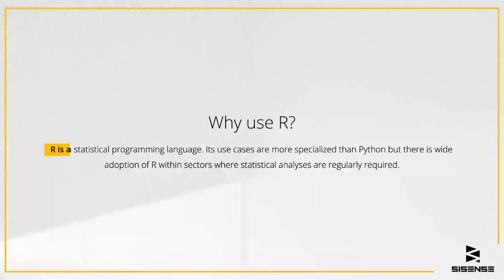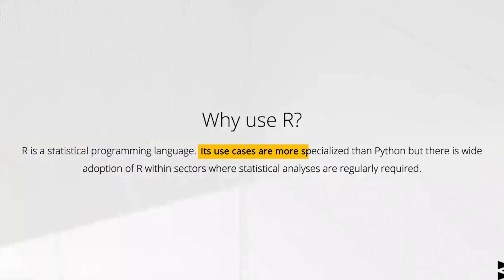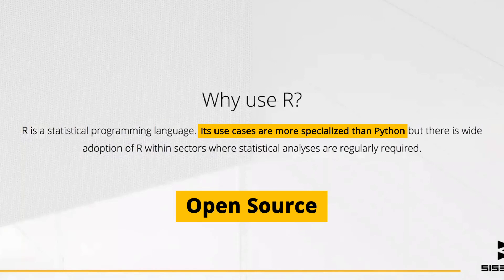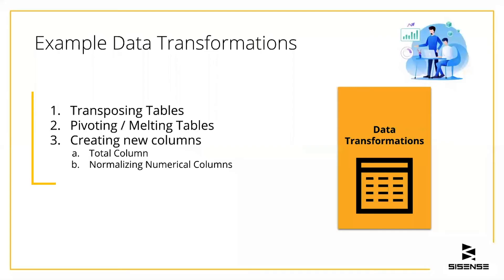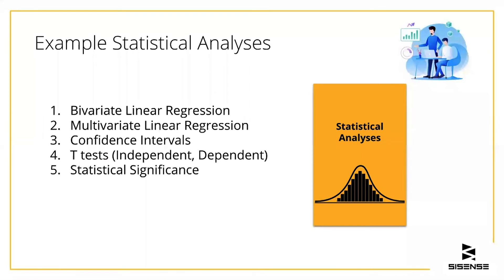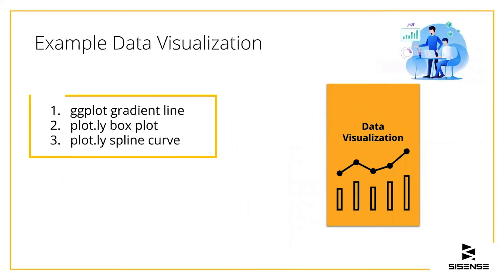R is a well-known functional programming language in the data space. However, it often doesn't get as much attention as its sister Python. R is very good at what it does and is open source, making it a preferable alternative to other math functional programming languages that require licenses like MATLAB. The three most common use cases for R are data transformations, statistical analyses, and data visualization. Data transformations are where we add or modify values in a data table for further analysis. Statistical analyses examine the statistical properties and significance of the data, and data visualization allows us to present data in an intuitive and digestible manner.